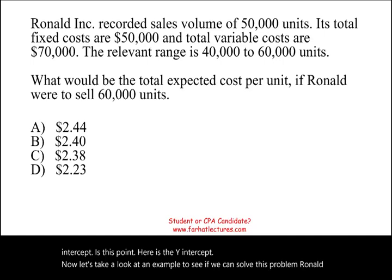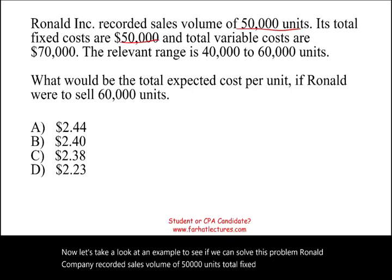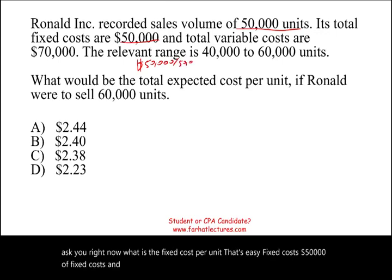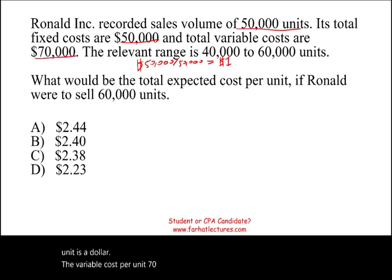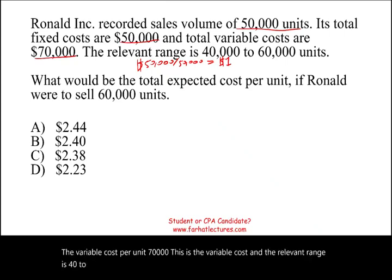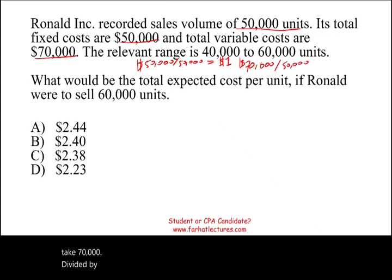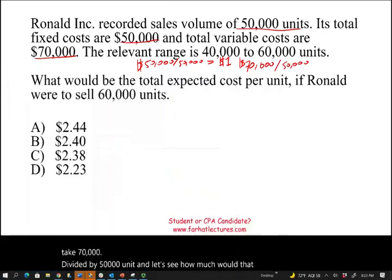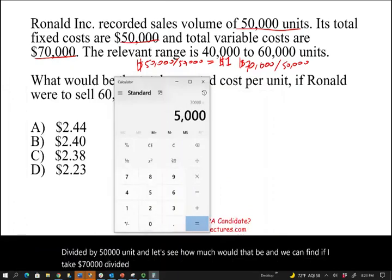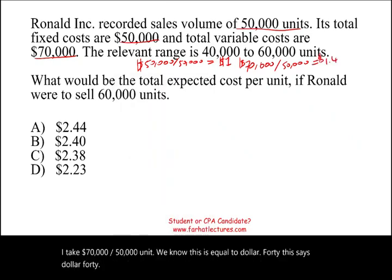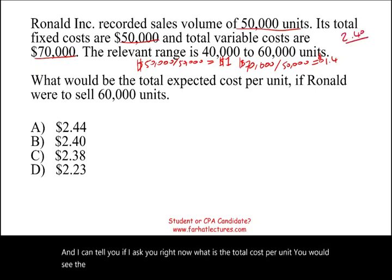Let's take a look at an example. Ronald Company recorded sales volume of 50,000 units. Its total fixed costs are $50,000 and total variable costs are $70,000. The relevant range is 40,000 to 60,000 units, and we are within the relevant range. The fixed cost per unit is $50,000 divided by 50,000 units, which equals $1. The variable cost per unit is $70,000 divided by 50,000 units, which equals $1.40. Therefore the total cost per unit is $2.40.